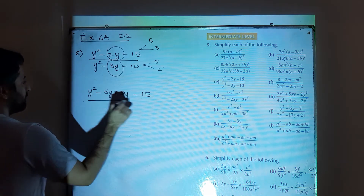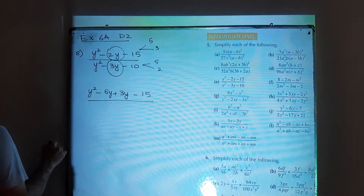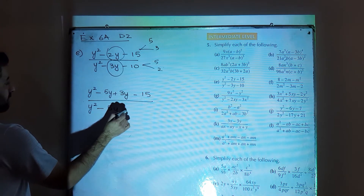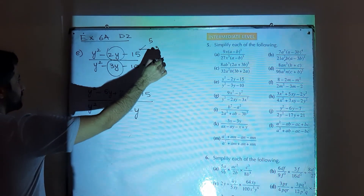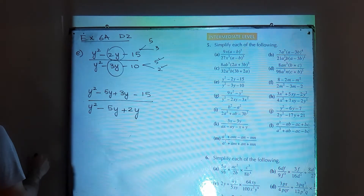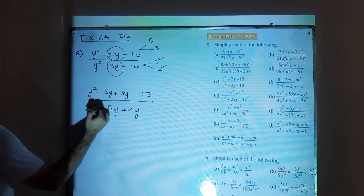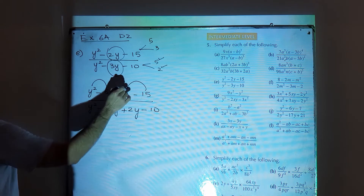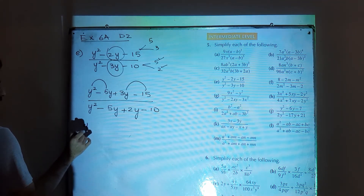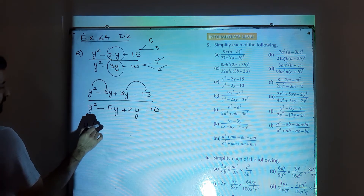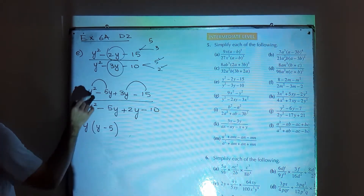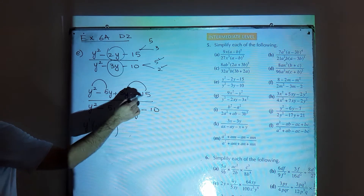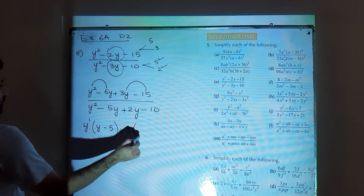In the numerator, minus 2y can be written as minus 5y plus 3y. In the denominator, minus 3y can be written as minus 5y plus 2y using factors of 10 to perform middle term break. In the numerator, take out y as common from the first two terms, leaving (y minus 5) inside the bracket. From the next two terms, take out 3 as common, leaving (y minus 5) inside the bracket.